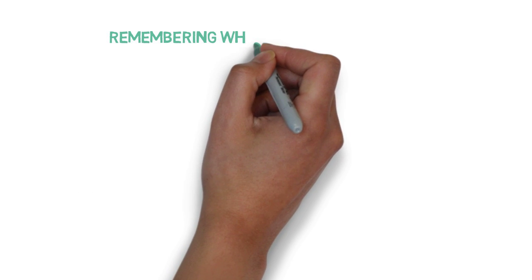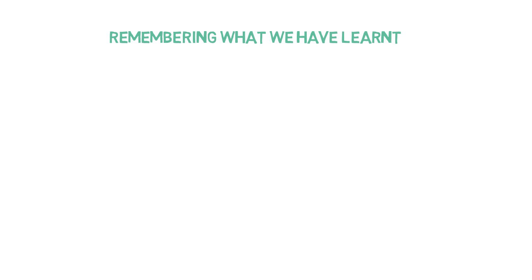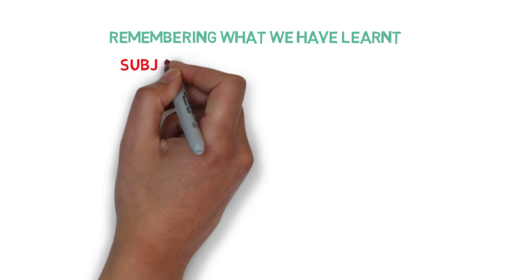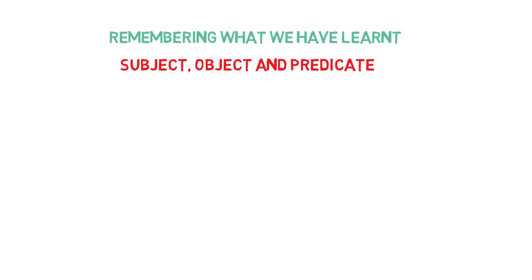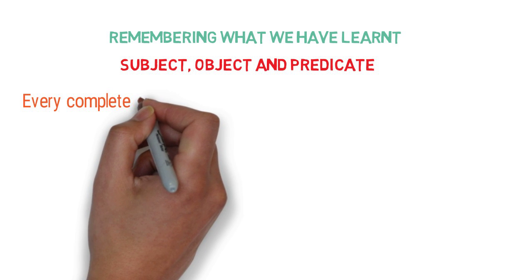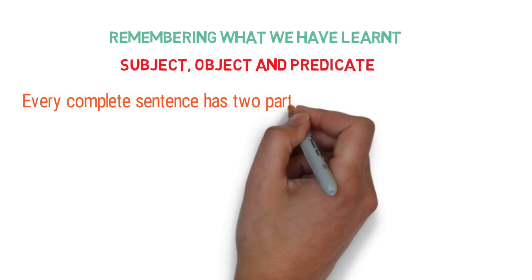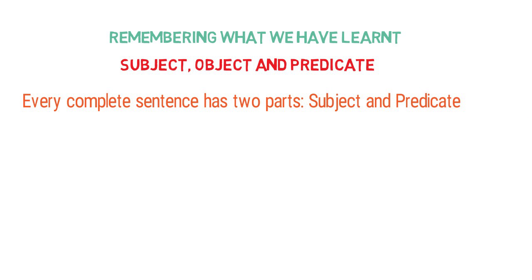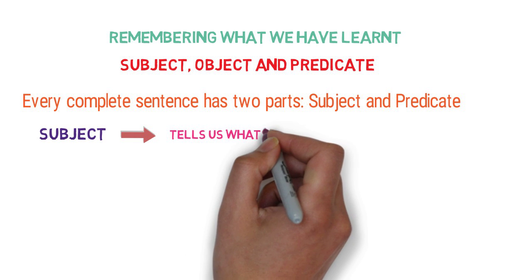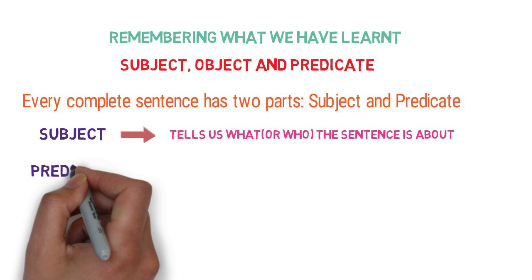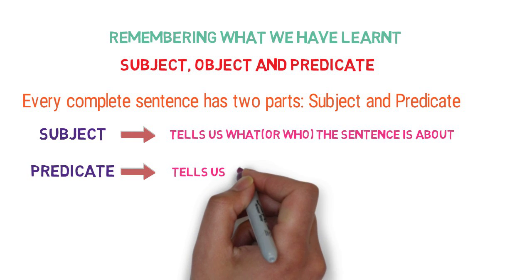Let's remember what we have covered in our previous video. We discussed subjects and predicates. I missed telling you the definition of object and what is the difference between object and predicate. We will look at what subject, object, and predicate is all about. Every complete sentence has two parts: subject and predicate. Subject tells us what or who the sentence is about and predicate tells us what the subject does.